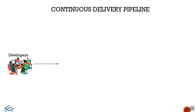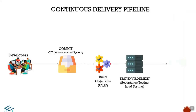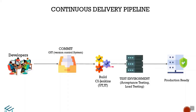Developers commit their code changes and versions. After a commit, the build happens, and then it goes to Jenkins for unit testing and integration testing. After that, it goes to the test environment for acceptance testing and load testing. Once those pass, it reaches continuous delivery. If the code is production-ready, it goes to continuous deployment. You can use a Jenkins pipeline or an agile maturity pipeline for continuous deployment and delivery.